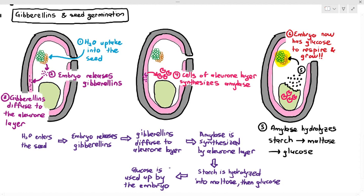This is what you need to know for gibberellins and seed germination for now. How gibberellin causes the aleurone layer to synthesize amylase — step number four — we will cover in more detail in chapter 16. But if a question generally asks how does gibberellin stimulate seed germination, this is good enough. I hope you understand this part of the chapter on chemical coordination in plants. And with that being said, this chapter is finally over.